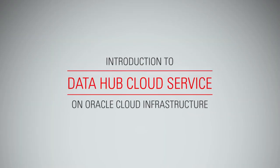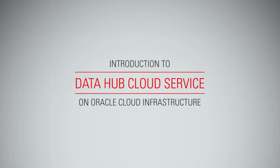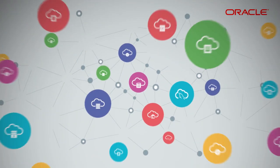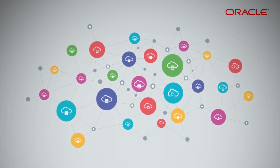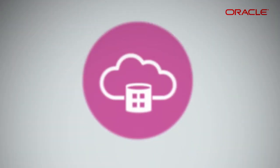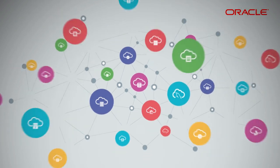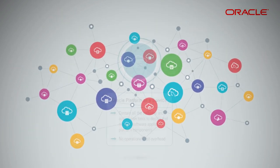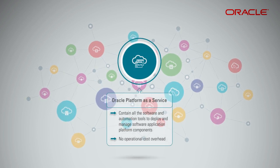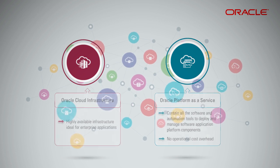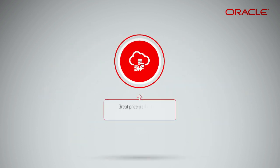Introduction to Data Hub Cloud Service on Oracle Cloud Infrastructure. Oracle Cloud Infrastructure's multi-regions offer highly available infrastructure, ideal for enterprise applications. Oracle Platform as a Service offerings contain all the software and automation tools you need to deploy and manage software application platform components without the operational cost overhead. This adds up to great price performance for the Data Hub Cloud Service.